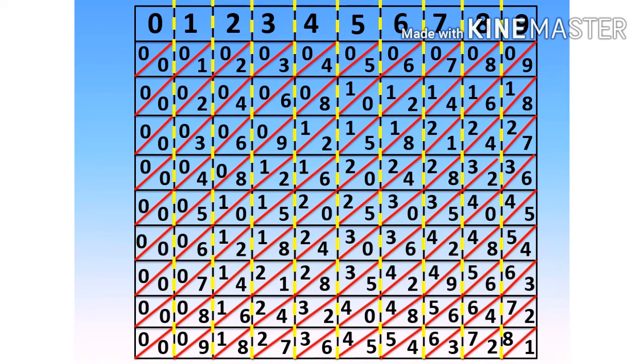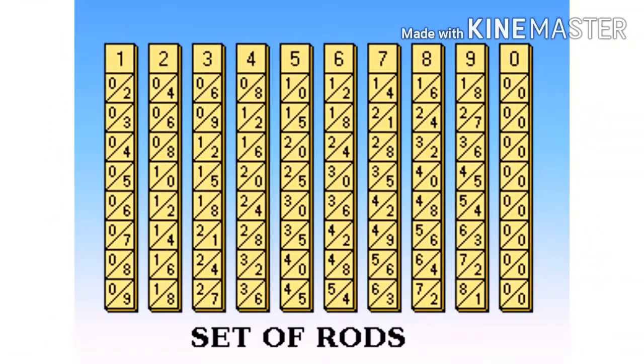Cut the strips vertically on the dotted lines. You will get 10 sets of rows as shown over here. Prepare a board to arrange the rows.